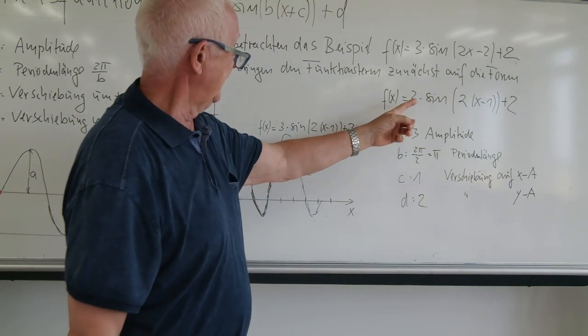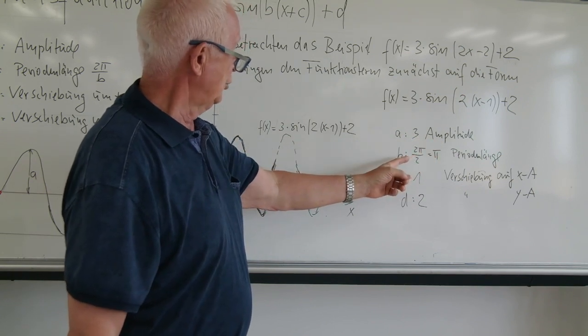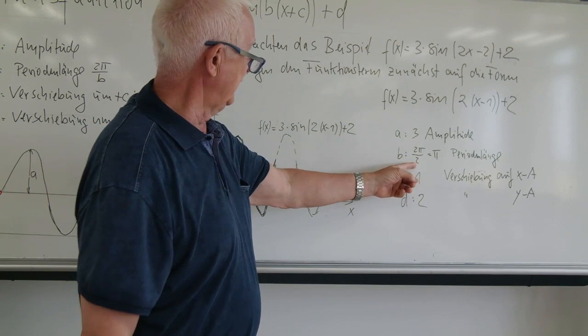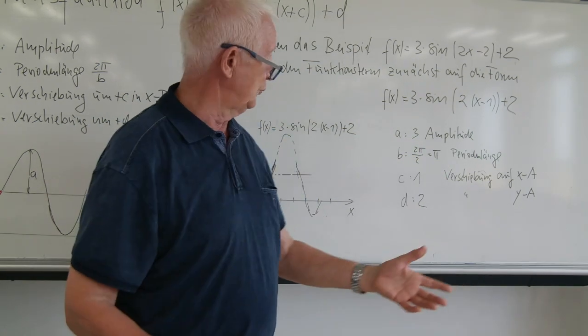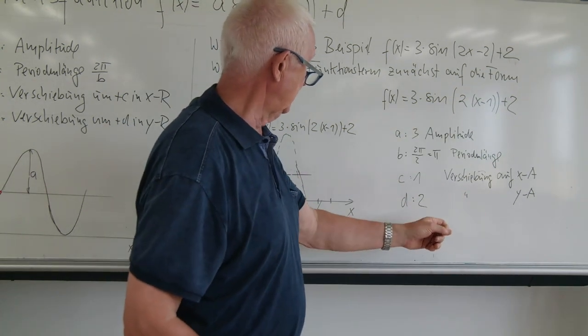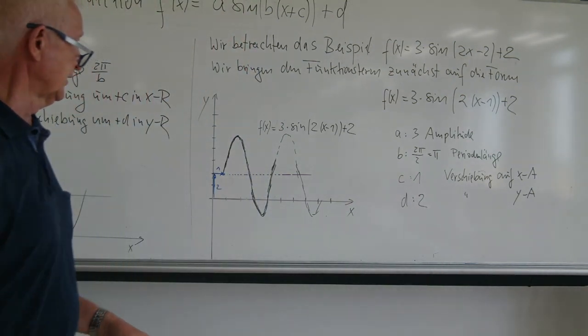Nochmal, der Wert 3 steht für die Amplitude. Die Periodenlänge errechnet sich jetzt durch 2π durch b, b ist 2, also ergibt sich die Periode durch π. c ist die Verschiebung um 1 in x-Richtung und d ist die Verschiebung um 2 in y-Richtung.